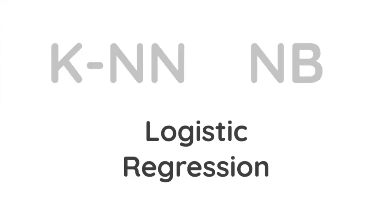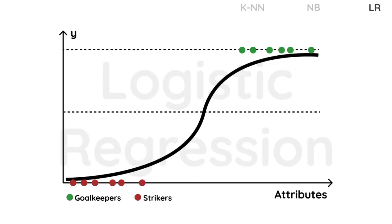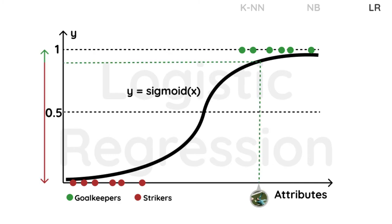Last but not least, let's introduce our logistic regression model. In logistic regression, we see this S-shaped curve with a clear distinction between goalkeepers and strikers. On the x-axis, we consider the attributes of a player, such as ball control and goalkeeping reflexes. We process the attribute vector and put it into the sigmoid function, where the output will be squeezed to a range between 0 and 1. The output can be interpreted as a probability on the y-axis. We benchmark this probability against a threshold of 0.5, and in the case of De Gea, we get a high probability that he is a goalkeeper.